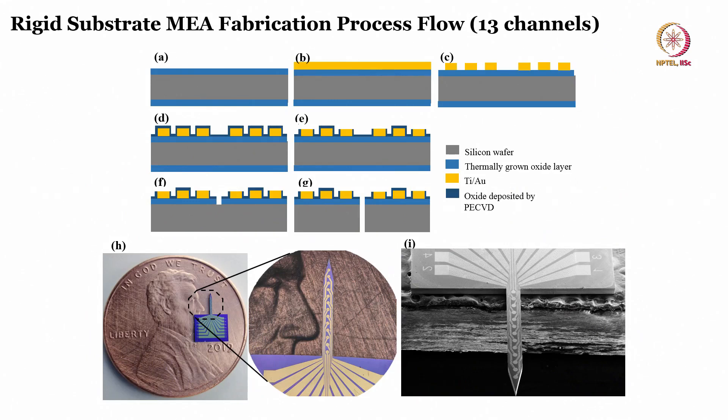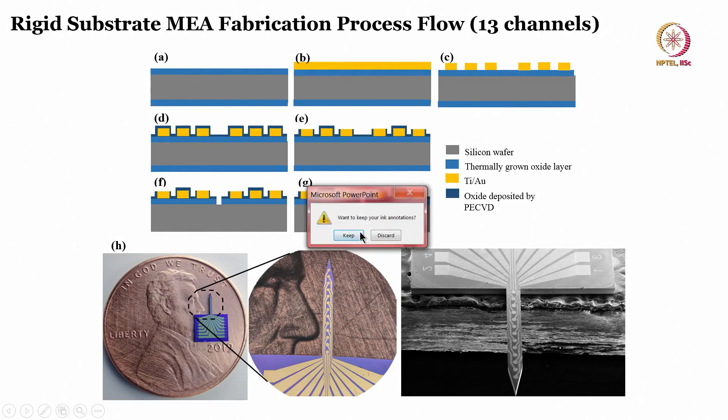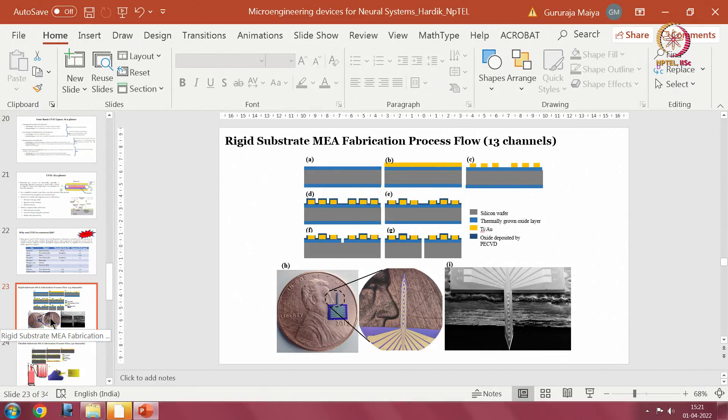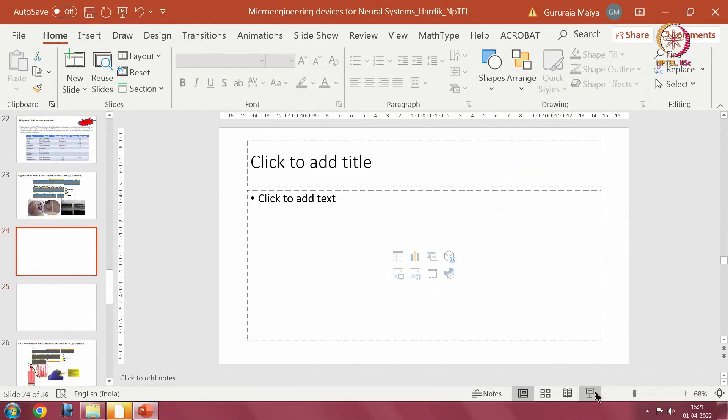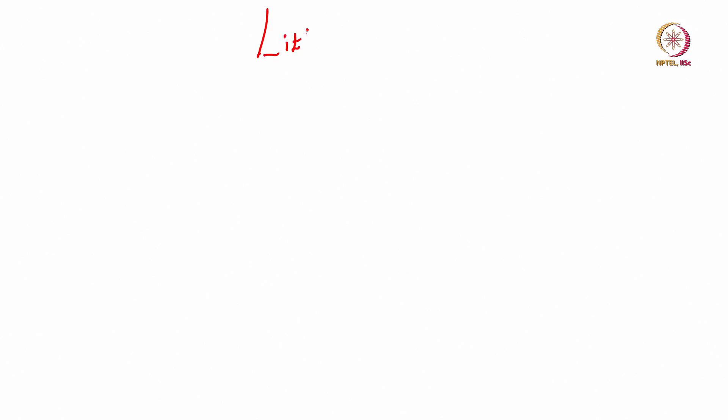Now let us understand how to quickly fabricate a micro needle, electrode, or probe with several electrodes integrated onto it. Before that, let us understand a bit about lithography — specifically photolithography, which is considered the heart of microengineering techniques.